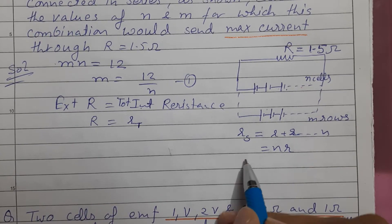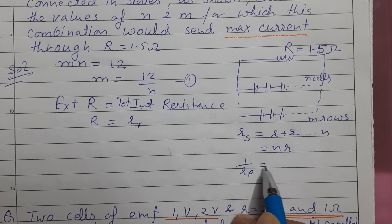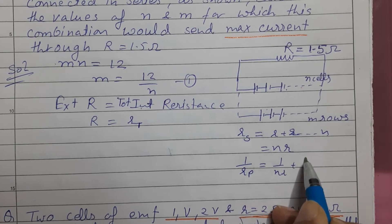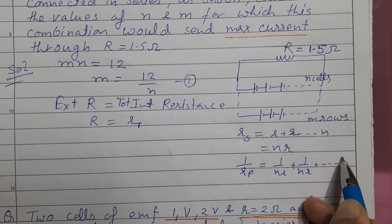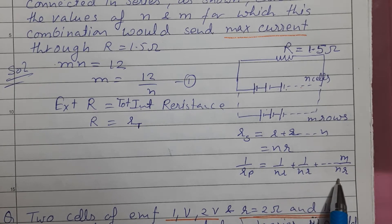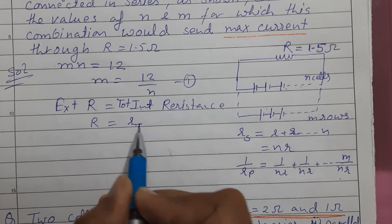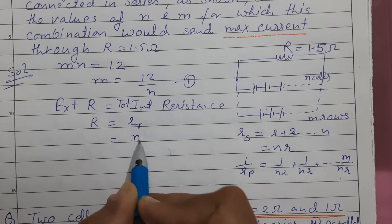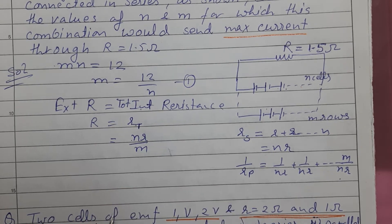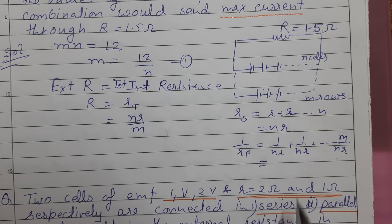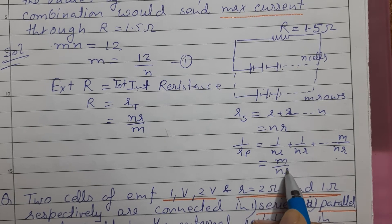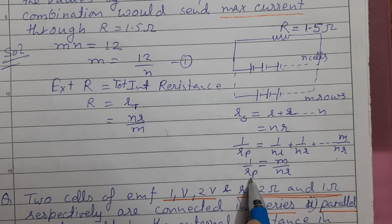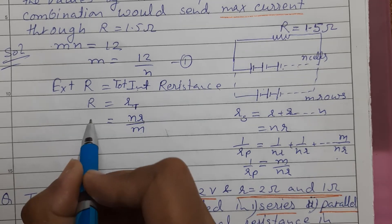For M parallel rows, using the parallel resistance formula 1/R_P = 1/R_1 + 1/R_2 + ... up to M terms, the total internal resistance works out to N·r divided by M. So R_total internal equals N·r by M.